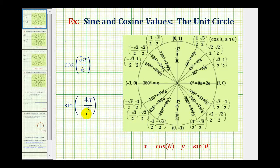We want to find the exact trig function values using the unit circle. The great thing about the unit circle is that if we sketch the angle in standard position, the point where the terminal side intersects the unit circle gives us both the cosine and the sine function value. The x-coordinate is equal to cosine theta, and the y-coordinate is equal to sine theta.